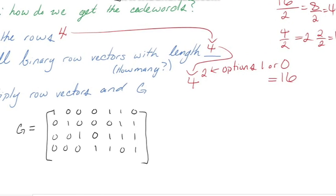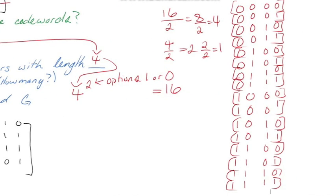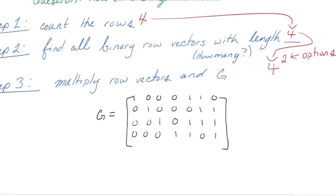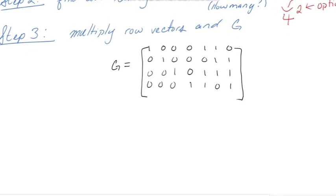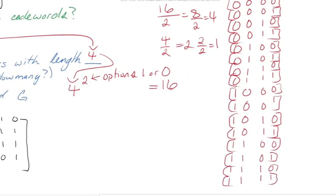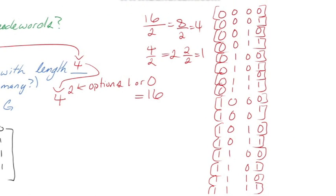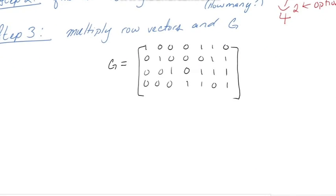And then in step three, in our last step, is just multiplying these row vectors times G. So for example, our, I will use, let's say this row vector right here. We have to do it for all of them, but I'm just going to use this one as an example.